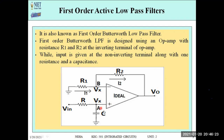At the non-inverting terminal of the op-amp, we have used one R and C combination. This filter is also known as the first order Butterworth low pass filter, designed using an op-amp with resistances R1 and R2. At the inverting terminal, R1 is grounded and R2 is used in the feedback. The output is V_out, and the node potential is called Vx.